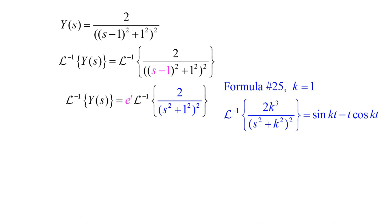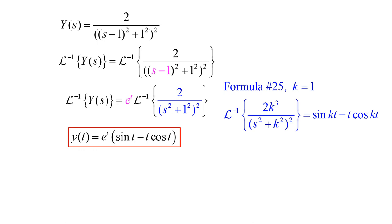We look at formula number 25 from the appendix with k equal to one. Formula 25 says the inverse Laplace transform of 2k cubed divided by (s squared plus k squared) squared equals sine of kt minus kt times cosine of kt. Applying that with k equal to one gives us y(t) equals e to the t times (sine of t minus t times cosine of t). And that's the solution to our differential equation.